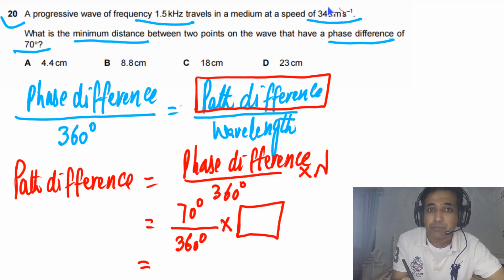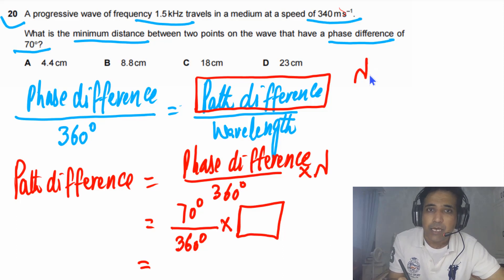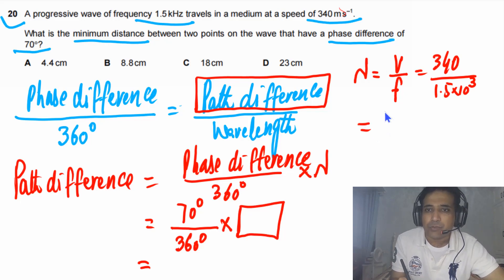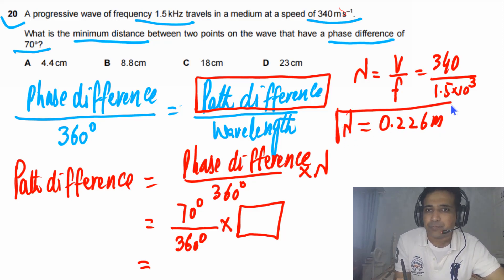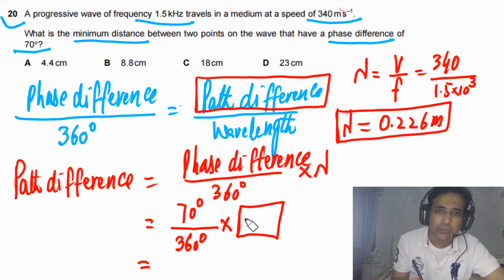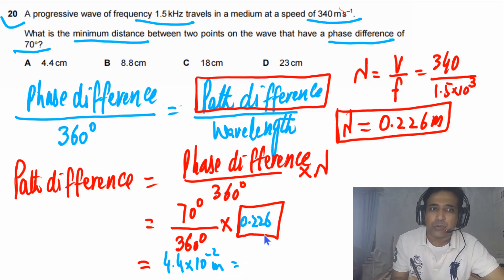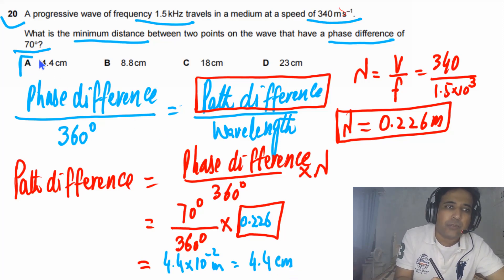We have the frequency and speed of the wave in that medium, so lambda equals V divided by F. V is 340 meters per second and frequency is 1.5 kilohertz, which is 1.5 × 10³. Solving this gives lambda equal to 0.226 meters. Plugging in, our final answer is 4.4 × 10⁻² meters, or 4.4 centimeters. The answer for this question is A.